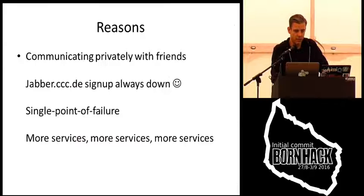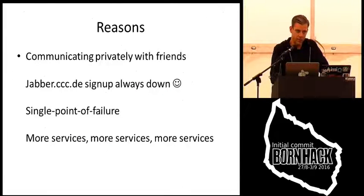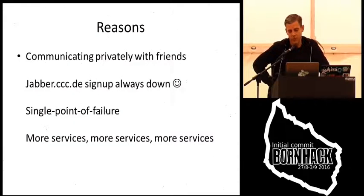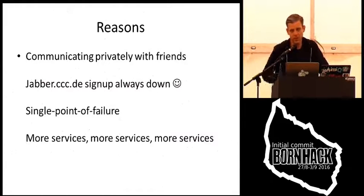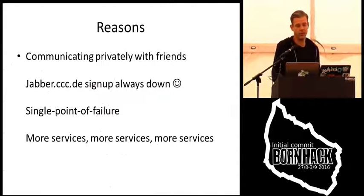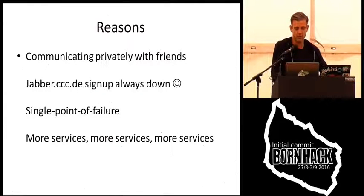The reasons why we did this was communicating privately with friends. Facebook changed their XMPP implementation and it became very hard to use Pidgin and other clients on it. And Jabber.CCC.de is a very well known XMPP server — many people use it — but their sign-up is always down or the CAPTCHA is failing, and also it's a single point of failure. So I set up my own XMPP server because I think we need to have more services, so when one goes down, we'll have another.